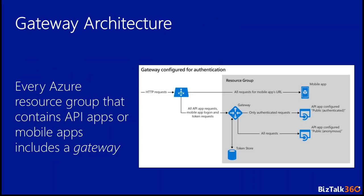Let's talk briefly about what the gateway is actually doing. For every resource group you have a gateway, and it allows you to provide authentication capabilities. All requests go through the gateway. Depending on how the gateway is configured, you can go through authenticated requests, or all requests go to your public application if it's accessible. The gateway has a token store — this is where it stores the token for the identity provider you are communicating with, allowing you to authenticate against that particular provider.